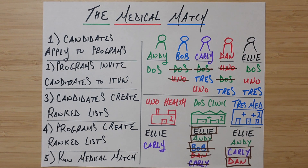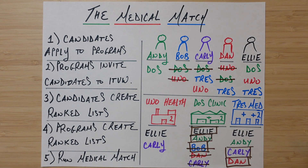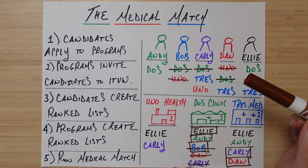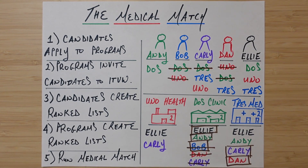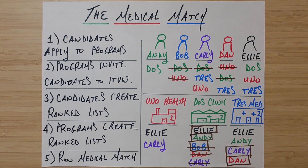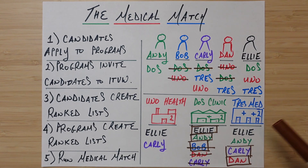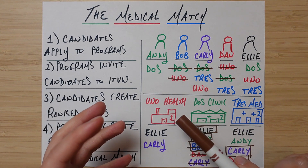Let's review the outcome of the match. Trace Medical will have Carly and Dan. Dose Clinic will have Ellie and Andy. Uno Health did not get any candidates during this process. And Bob did not get matched to any program. You might think this is inefficient — we got four out of five candidates matched and two out of three programs filled. But is there some different allocation where Bob could go somewhere or Uno Health could recruit somebody?